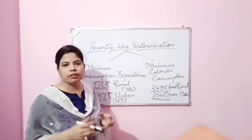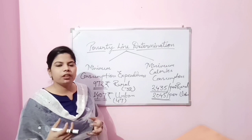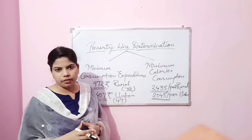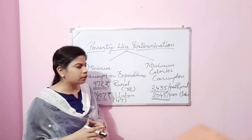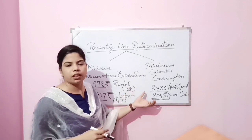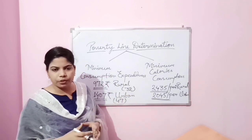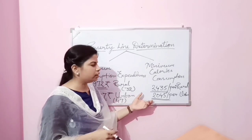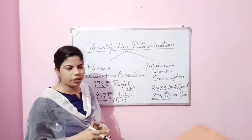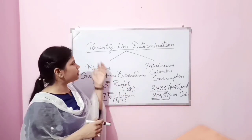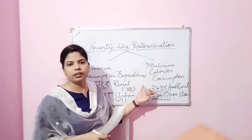Because in rural areas, the majority of people are engaged in field activities and do more physical activity compared to urban area people — such as agricultural work and casual labor. So, more calories are required for persons belonging to rural areas. These are the two determinations of poverty line: minimum consumption expenditure and minimum calorie consumption.